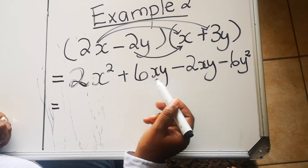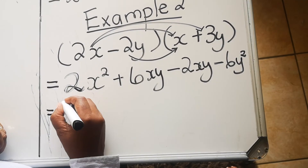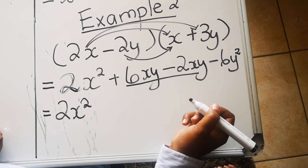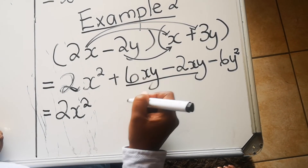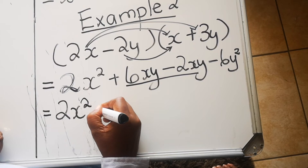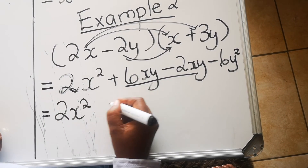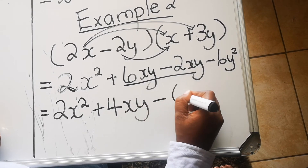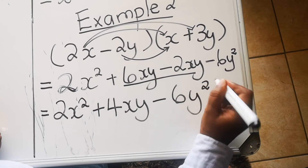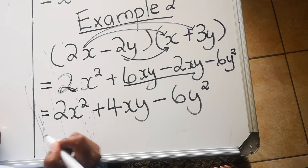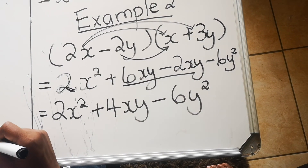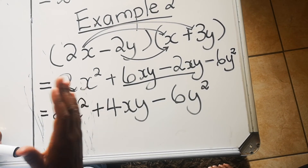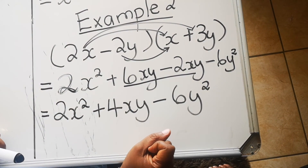Last multiplication: negative times positive is negative. Two times three is six. y times y is y squared. Now collect like terms: x squared has no other x squared, so write 2x squared. The like terms are plus 6xy and minus 2xy — subtract and take the sign of the bigger number to get plus 4xy. The last term is minus 6y squared. The final answer is 2x squared plus 4xy minus 6y squared. Thank you for watching — please practice this, as it is the foundation of your maths.